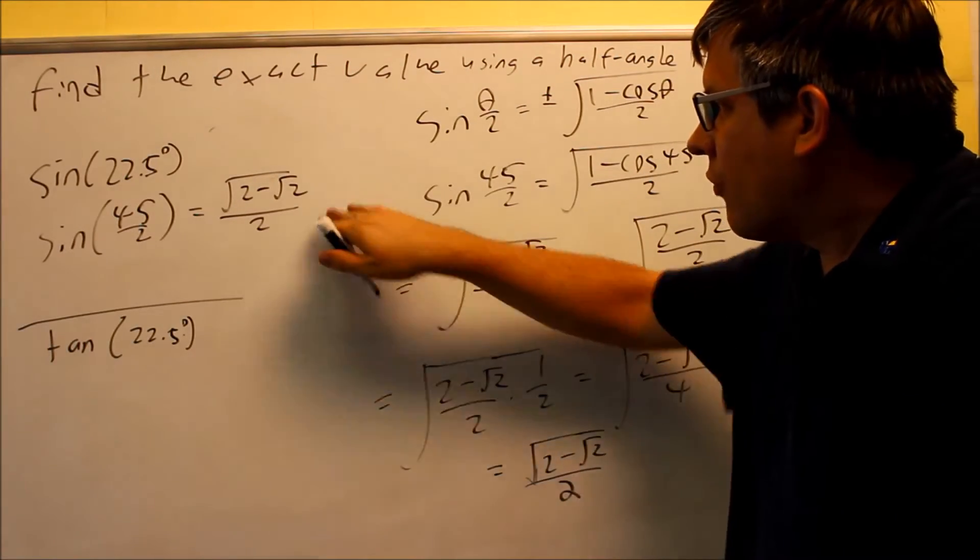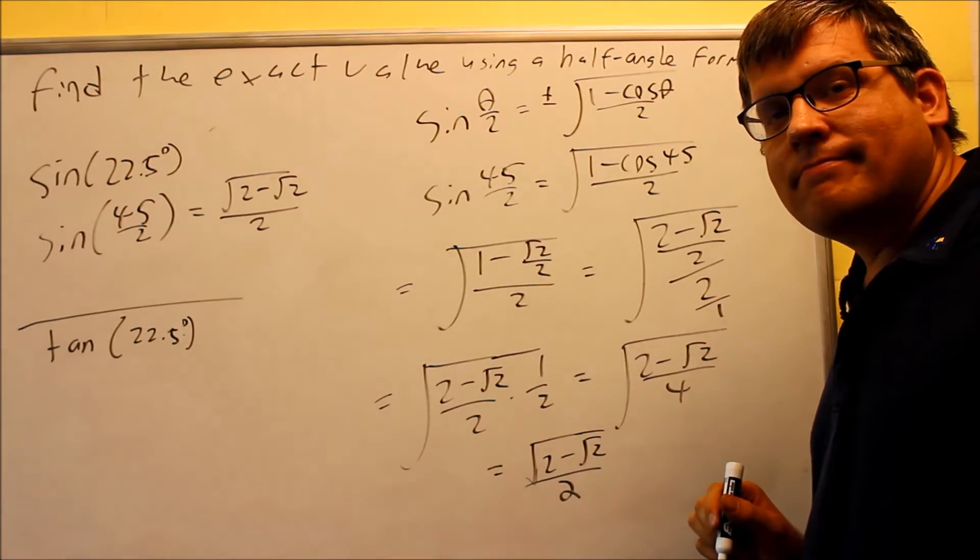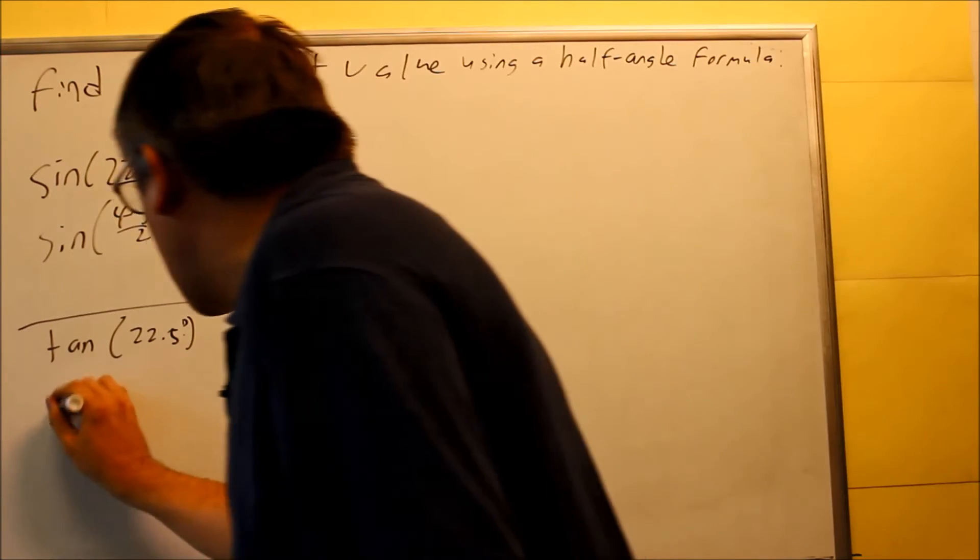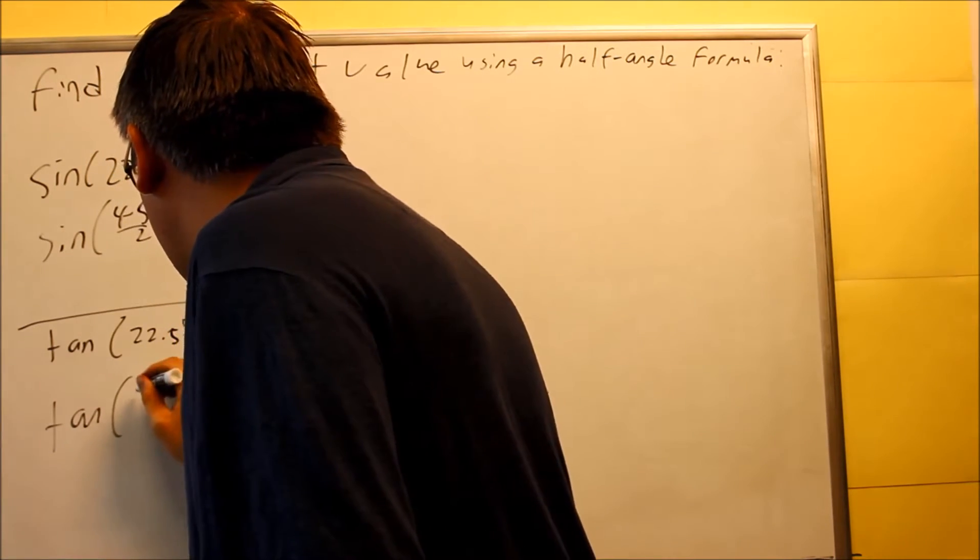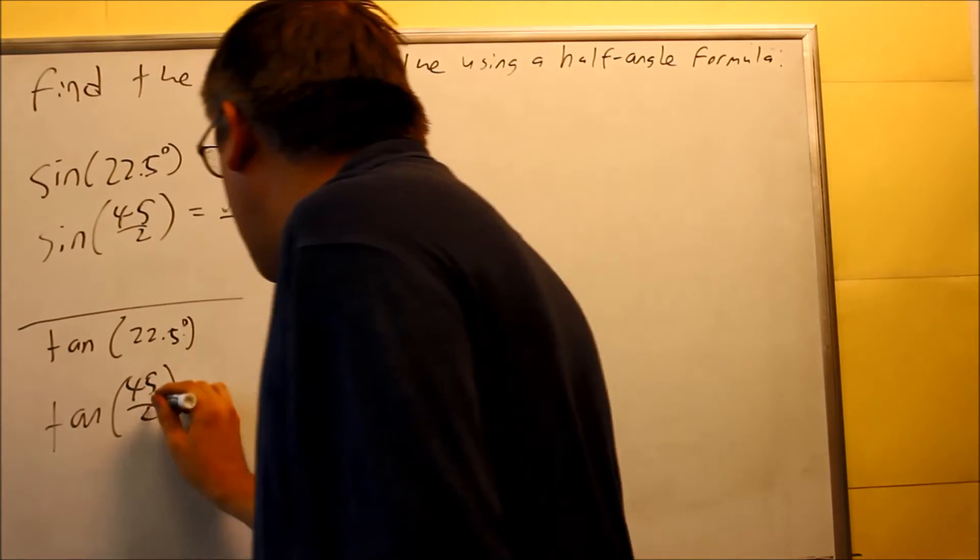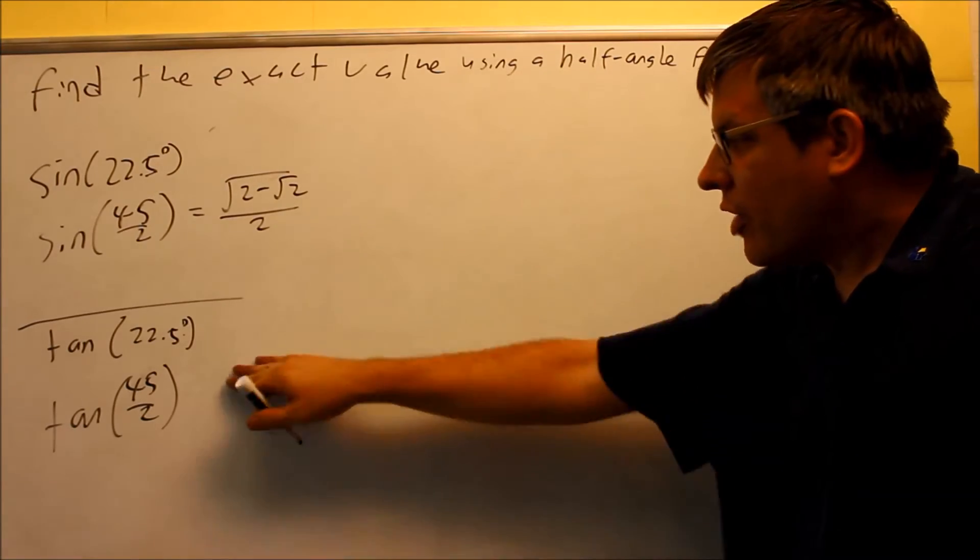So now that we've taken a look at the first one, let's now take a look at tangent 22.5. Okay, tangent 22.5. We know we can use the same fraction as before. That's still going to be 45 over 2. So we're still going to start by doing that. We want to use the improper fraction that we found earlier.